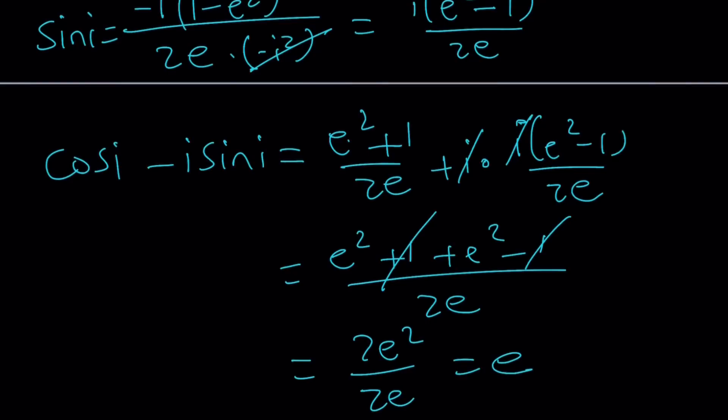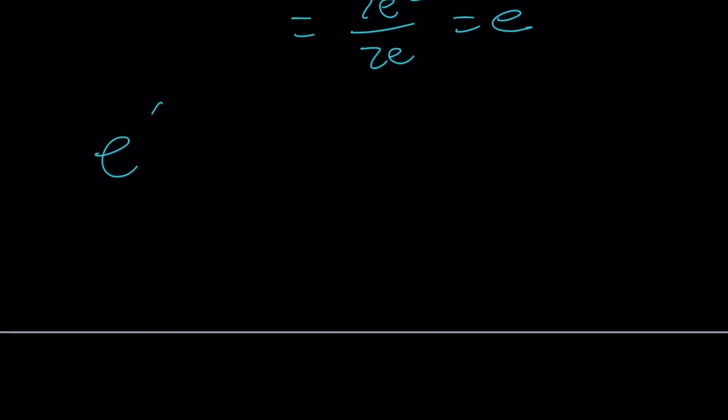Wow. That's amazing, right? We got something super duper simple. e to the power x equals e. So cosine i minus i sine i is just e. Wow. That's crazy, isn't it? That's real.